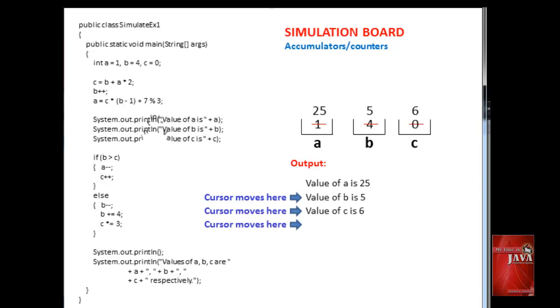Please note that the cursor moves to another line after printing each value because of System.out.println command. Values displayed at this point are 25, 5, and 6.